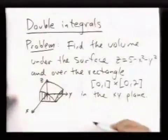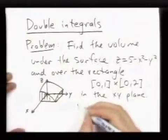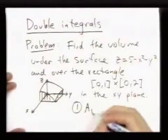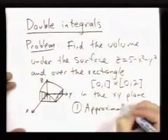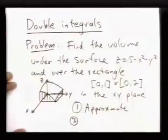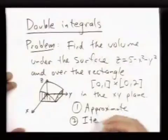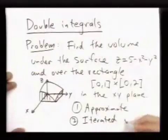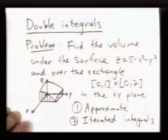Now I'll be talking about a partial way of solving this, which is how do we approximate the volume? And how do we find it explicitly? That's related to something called iterated integrals.